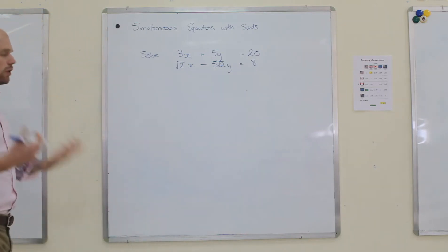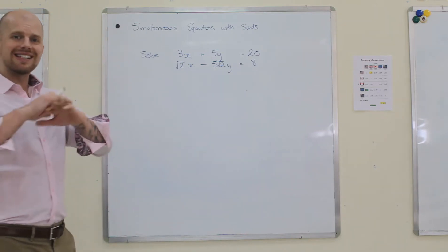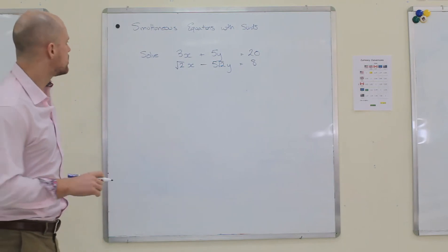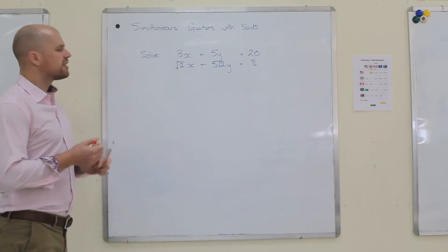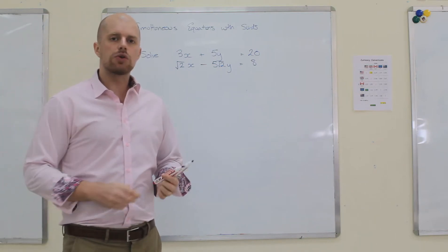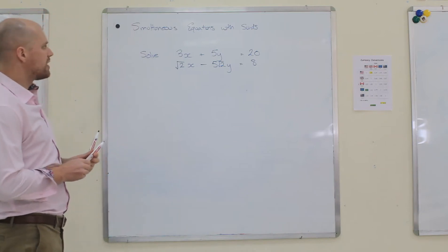Now, to solve simultaneous equations that have surds, it's exactly the same thing as when you're solving all simultaneous equations. You want to make the coefficients of x or y be the same, and then add or subtract them so that the y's or x's disappear.